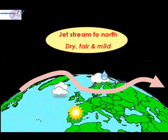Good spells of sunshine are occurring through many central parts of Europe and also towards the south. It's in these conditions in the summer, when the jet stream is typically further north, that we find heatwaves across much of Europe. So dry, fair and generally mild adequately sums up conditions when the jet stream is north of the British Isles.